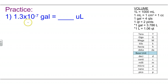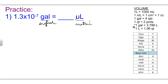We'll start with number one. Notice that we have gallons, which is an English unit, and we have microliters, which is a metric unit. So we're going to have to use one of our two conversion factors that has an asterisk next to it, because those are the conversion factors that get us between the English and the metric systems.